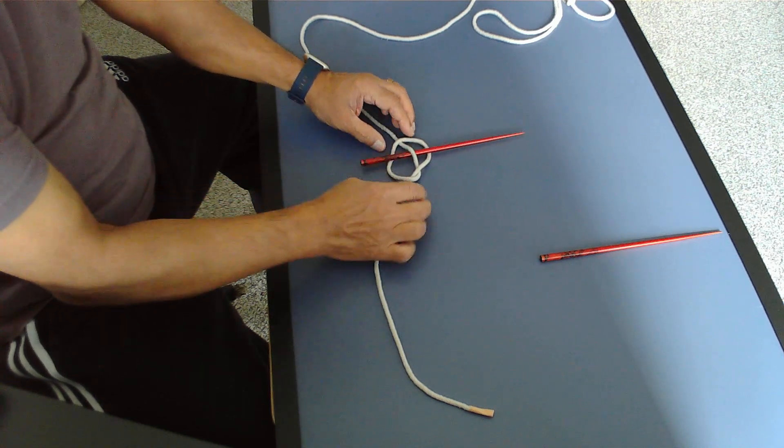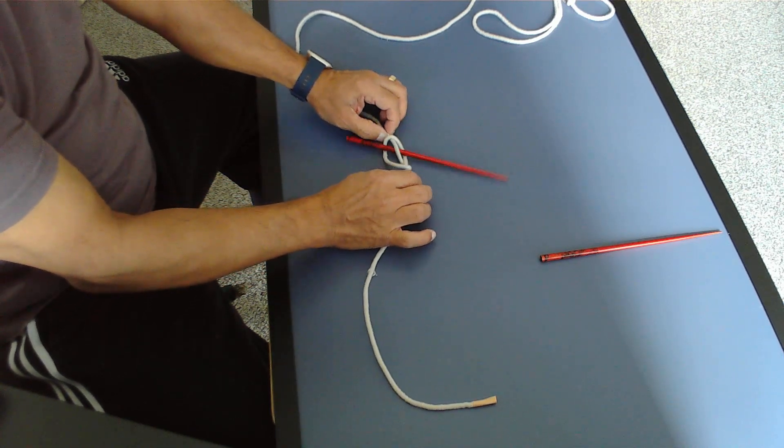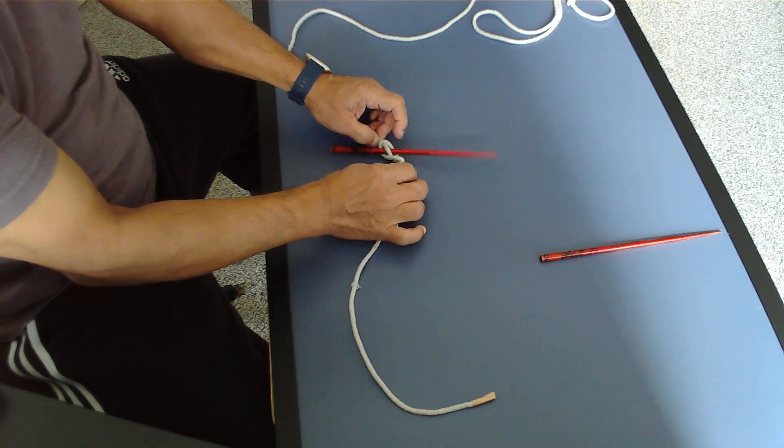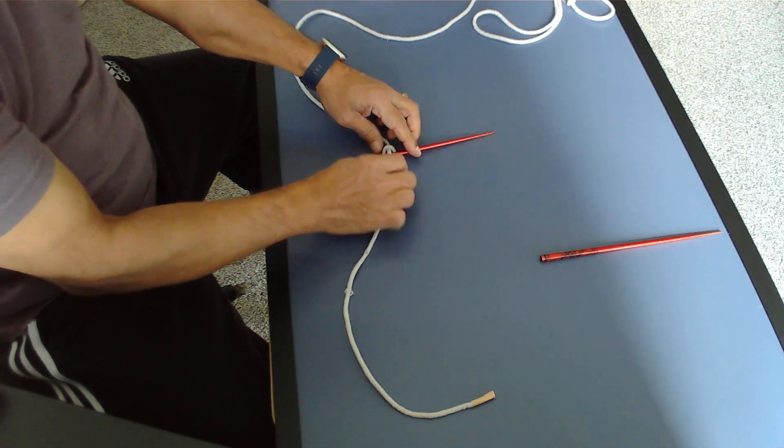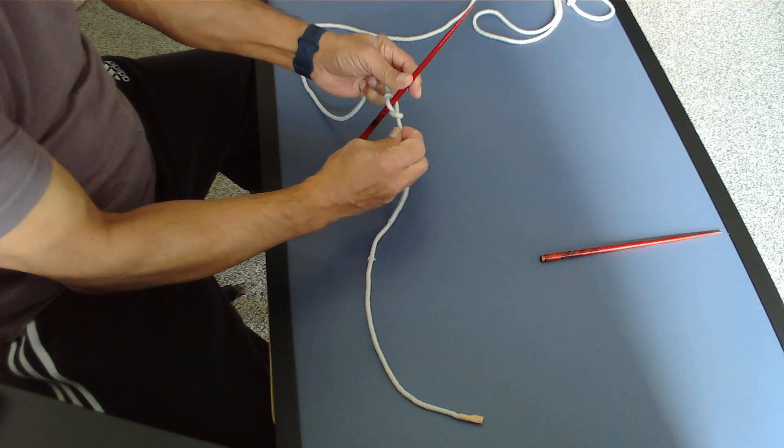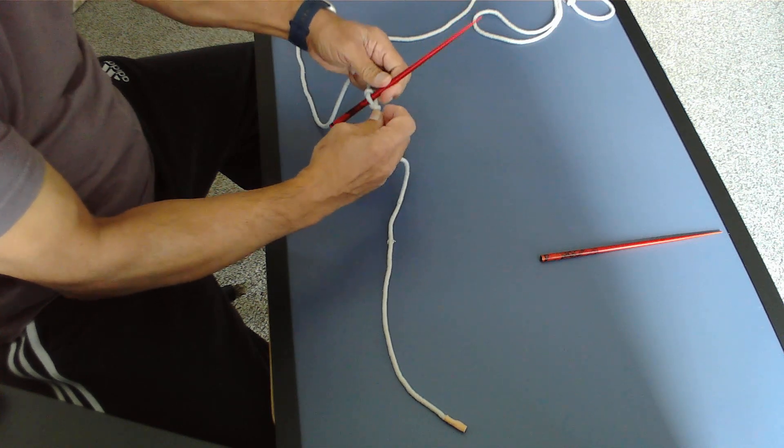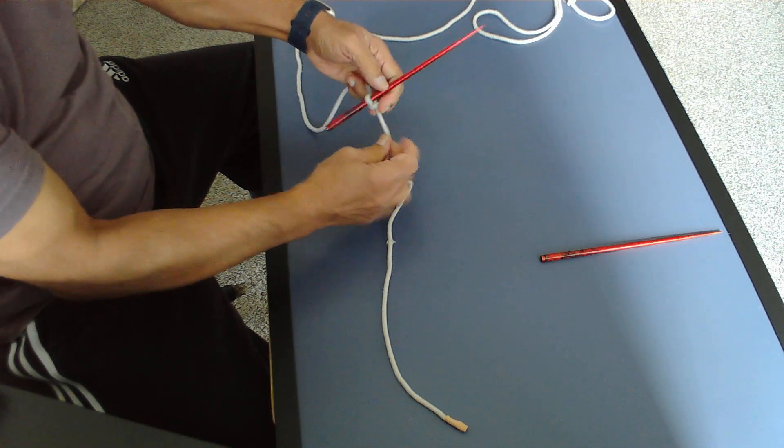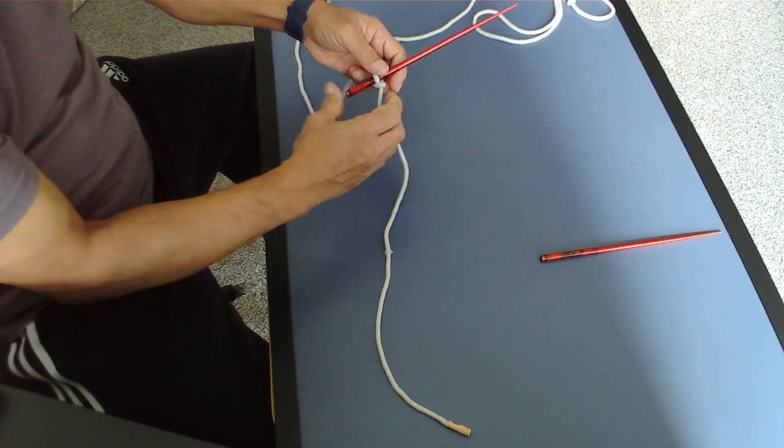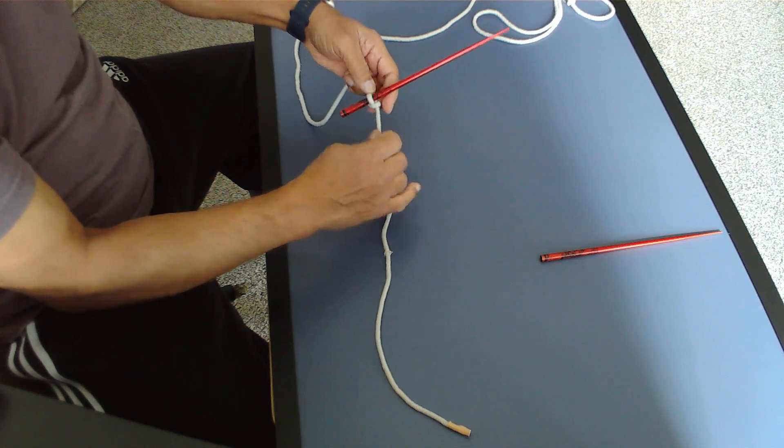And then I simply pull this, hold the marlin spike, and you can simply pull from both ends. So I have passed the first marlin spike through the marlin spike hitch.